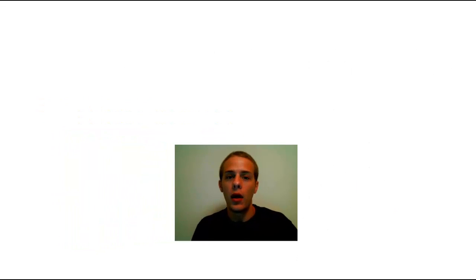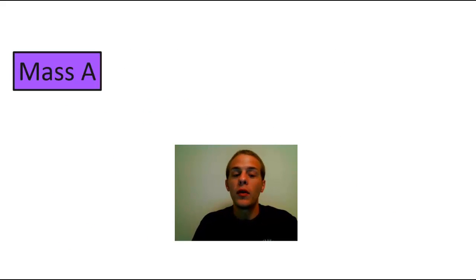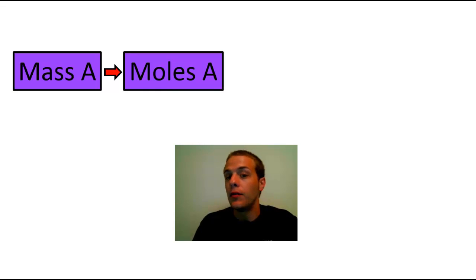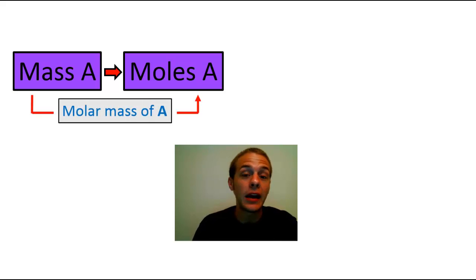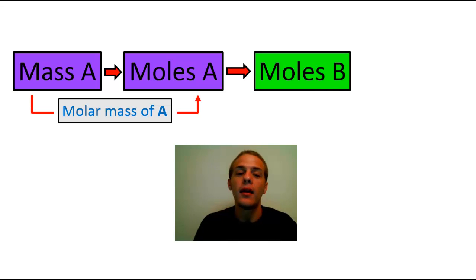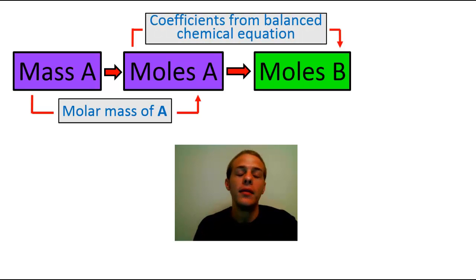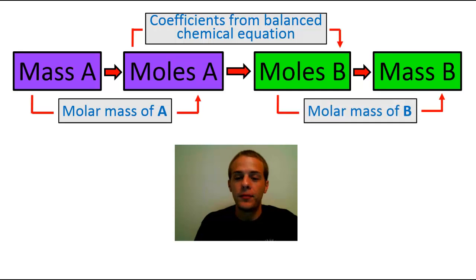Just to review a little bit about how stoichiometry works, typically what you're going to do is you're going to start with the mass of one of your reactants or products and we'll call that A and then from there you can convert that mass of A into moles of A using the molar mass of A which is obtained from the periodic table and then once you have the amount of one of your reactants or products in moles, you can actually convert that to the amount in moles of another reactant or product and it's the coefficients that come from the balanced chemical equation that allow you to carry out this conversion and then finally once you have the amount in moles of that other reactant or product, you can use its molar mass to convert that back into a mass. So it's basically a three-step type of conversion. You convert from mass to moles, then you convert from moles of one thing to moles of another thing and then you convert from moles to mass.